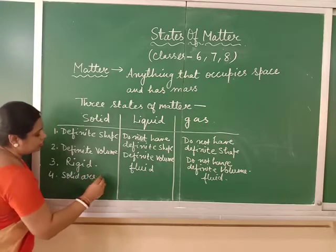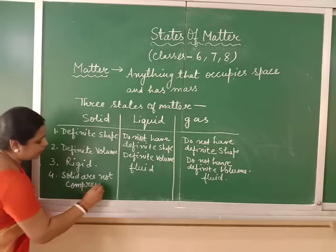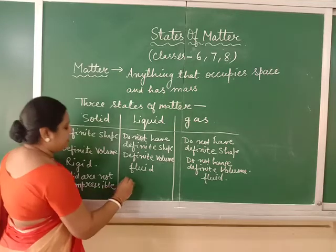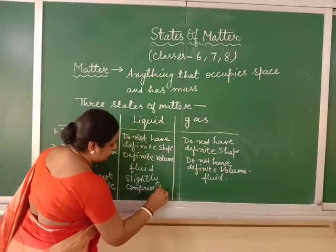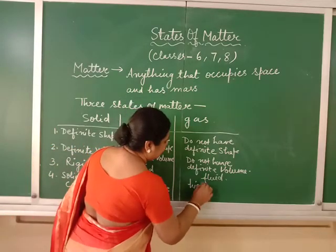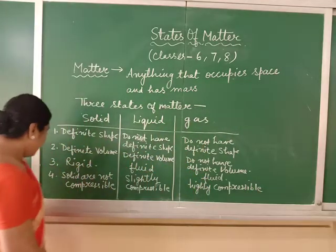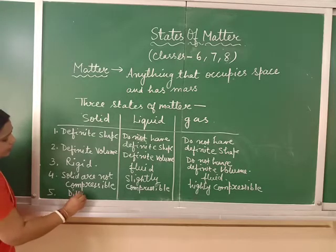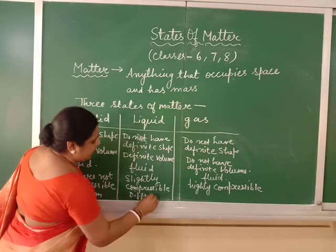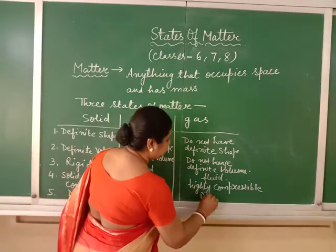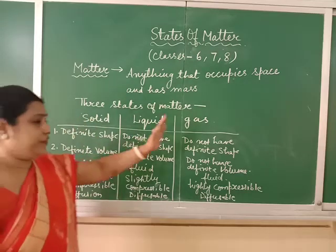Solids are almost incompressible — we cannot compress a solid. But liquids are slightly compressible, very little. Gases are highly compressible. Solids do not show diffusion easily; two solids kept in contact do not get intermixed automatically. But liquids and gases are diffused. So these are the common properties of solid, liquid, and gas.